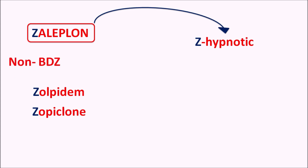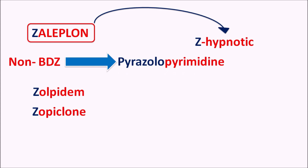That means these drugs are not structurally related with benzodiazepines, but still they can act as benzodiazepines. That's why they are classified as hypnotics. Zaleplon is a non-benzodiazepine belonging to the pyrazolopyrimidine category, so it is not having the benzodiazepine ring; instead it is having a pyrazolopyrimidine ring. These Z-hypnotics can be used in the treatment of insomnia.